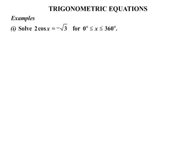The first one we need to solve 2 cosx equals the negative of root 3 for 0 degrees less than or equal to x, less than or equal to 360 degrees.